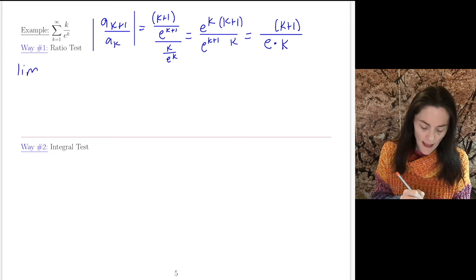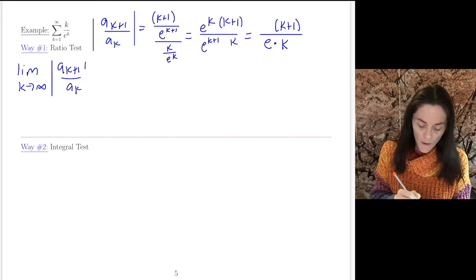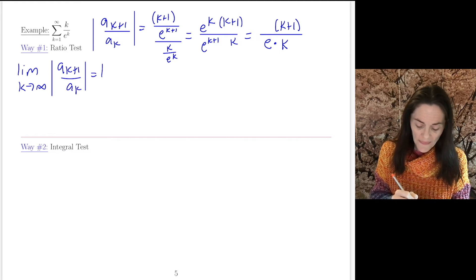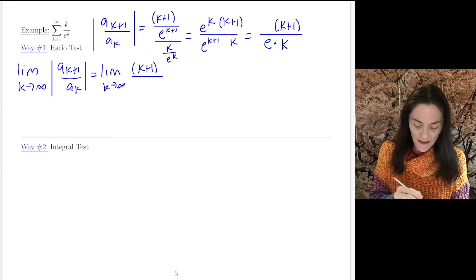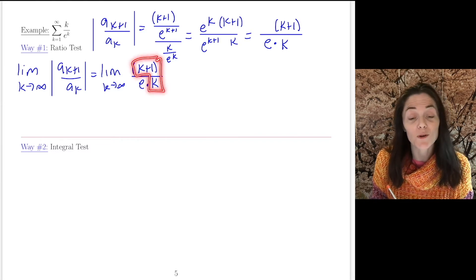Now I'm ready to take a limit as k goes to infinity of this. Absolute value, a_k+1 over a_k. And when I do, we take a limit as k goes to infinity of, we have (k+1) divided by e times k. Now, this part here, right, this part goes to 1.